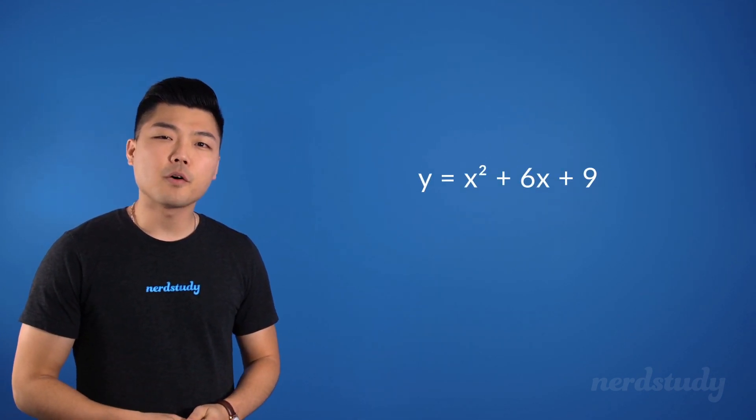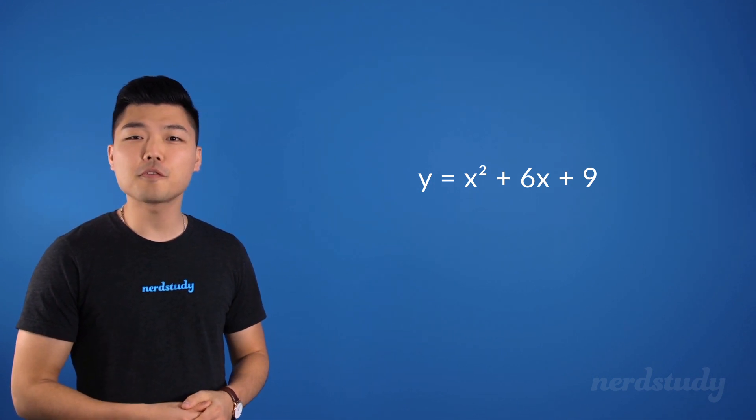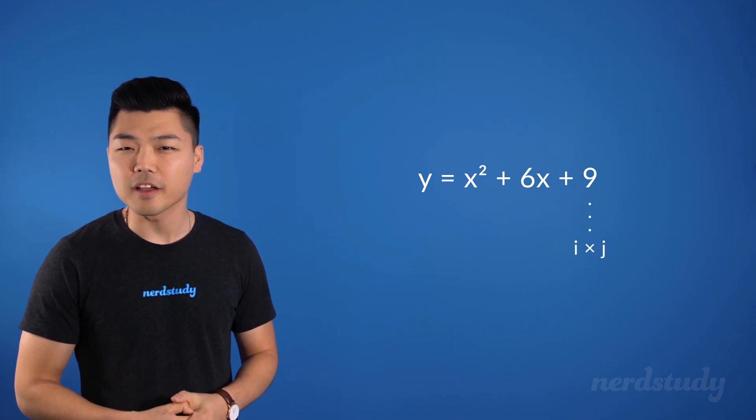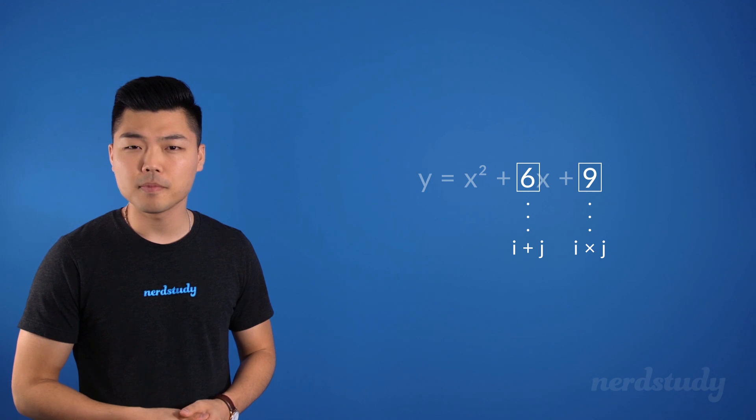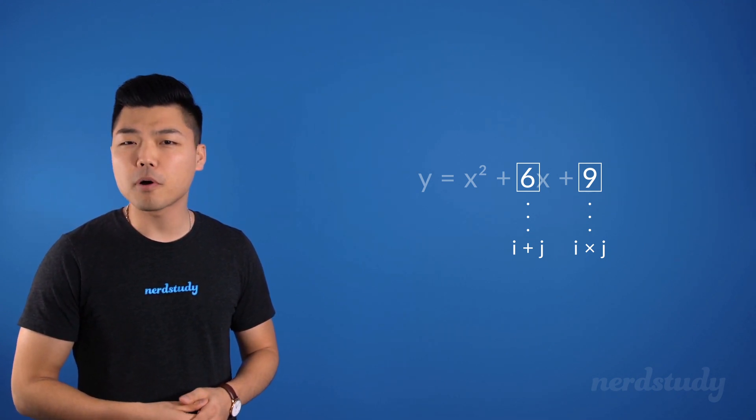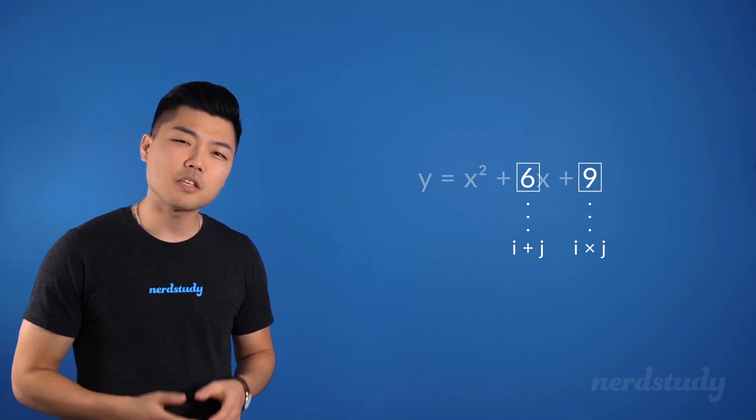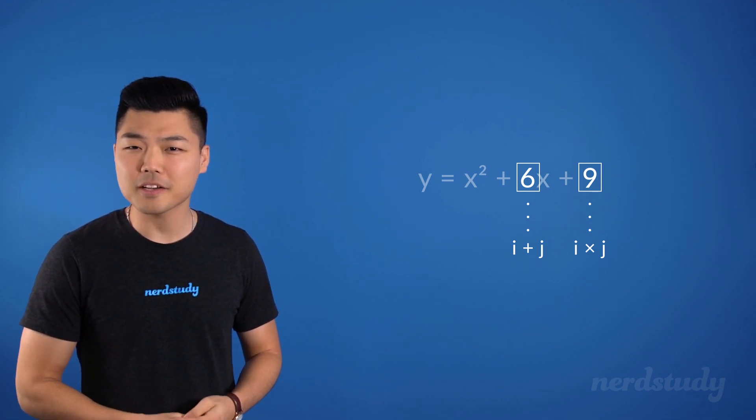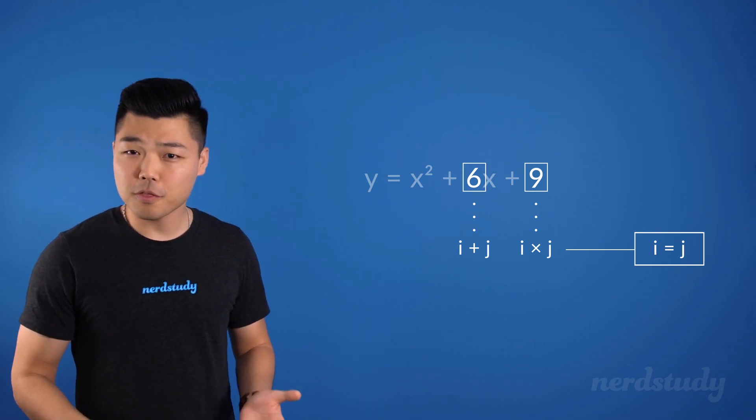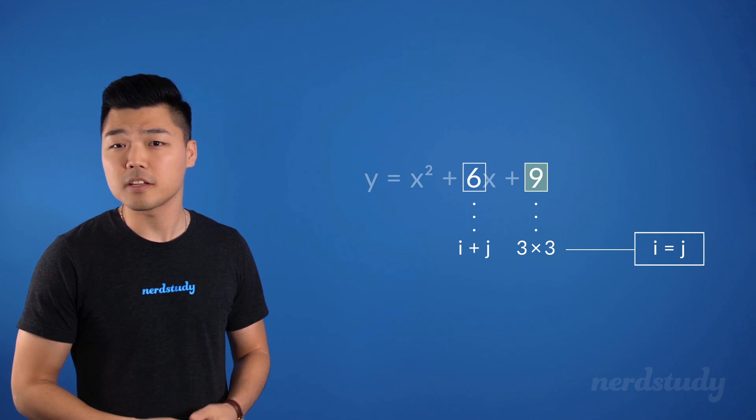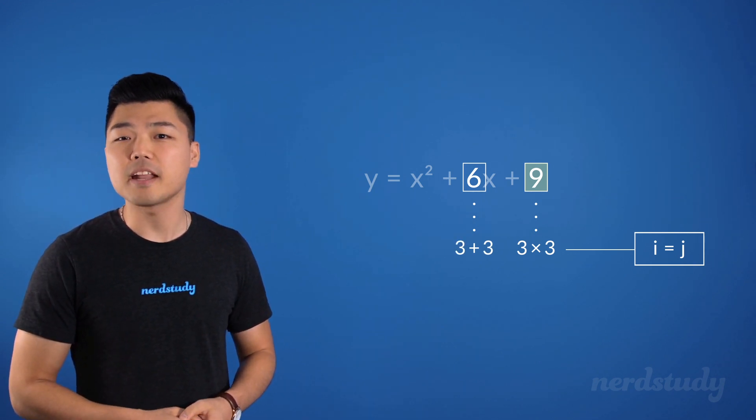We already learned about perfect square trinomials from our special products video. Here's an example of one of them. We know that when we factor this out, we're supposed to look for two factors of 9 that multiply together to get 9, but add together to get 6. The unique thing about perfect square trinomials was that the two factors would be the exact same number. So in this case, 3 times 3 would multiply to get 9 and 3 plus 3 would add to get 6.